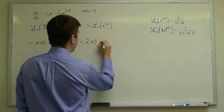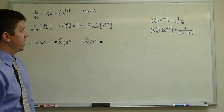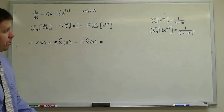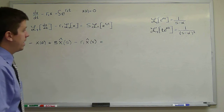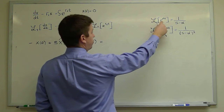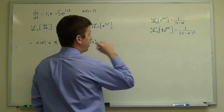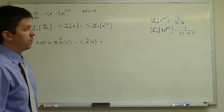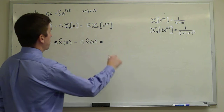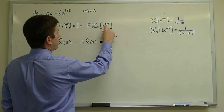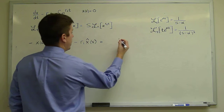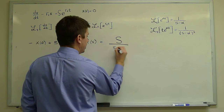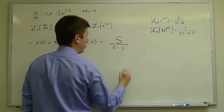Finally, we take the Laplace transform of the right-hand side. I've written down a couple of things from a table that will be useful: the Laplace transform of an exponential e^(α·t) takes the form 1 over (S minus α). Here we have α equals R2, so we'll have capital S divided by (s minus R2).